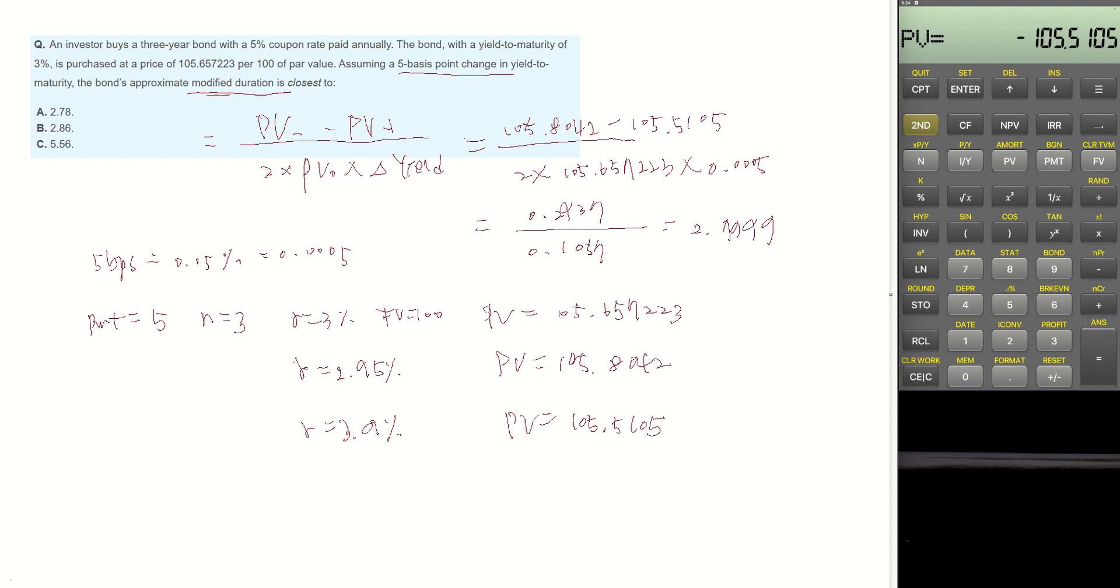So it is approximately 2.78. It means when YTM changes by 0.05%, bond price is expected to change 2.78%.